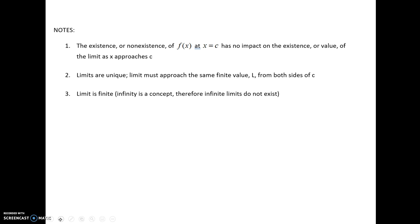So to sum it up, these are what all our examples showed for us. The existence or non-existence of a function at x is equal to c has no impact on the existence or value of the limit as x approaches c. F of c, the y value of the function, does not necessarily have to equal the limit as x approaches c of the function. That's the first example we saw, the piecewise function. Limits are unique. They must approach the same finite value L from both sides of c. And lastly, a limit is finite. Infinity is a concept, and therefore infinite limits do not exist. The four examples that I showed you are examples of each of these three notes.